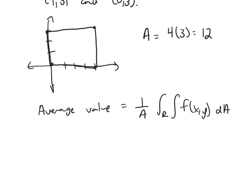So our average value will be 1 over 12. Now here our region is a rectangle, so it doesn't matter if you do dy dx or dx dy. So here I'll do dy dx. And y goes from 0 to 3, x goes from 0 to 4.